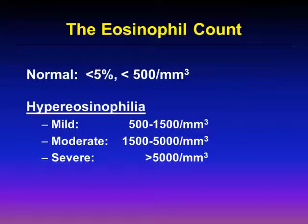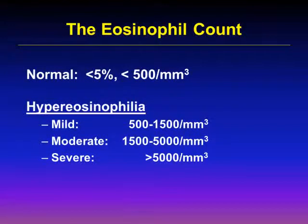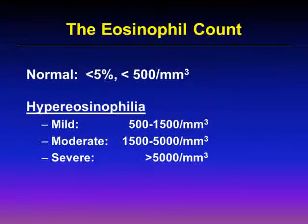The upper limit of normal for the range of percent eosinophils in the peripheral blood is approximately 3 to 5%, with a corresponding absolute eosinophil count of about 350 to 500 per cubic millimeter or microliter of blood. The severity of hypereosinophilia has been arbitrarily divided into mild — an eosinophil count ranging from approximately 500 to 1,500 per cubic millimeter — to moderate, where the absolute eosinophil count ranges from 1,500 to 5,000, and severe, where the absolute eosinophil count is above 5,000.